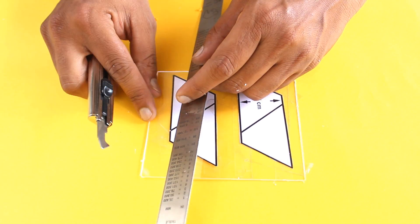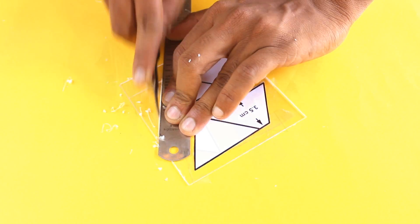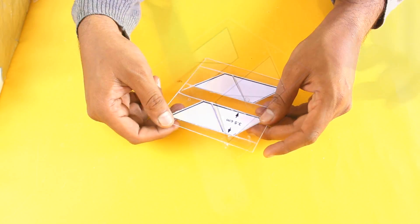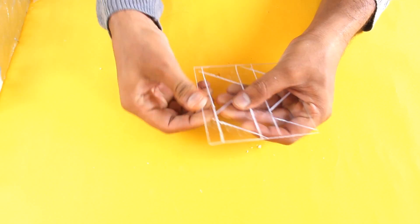Cut the shape as per the template. Remove the template from the sheet and break the pieces.